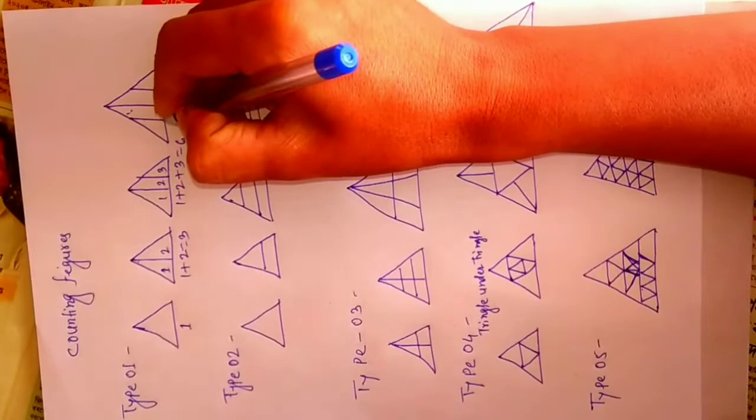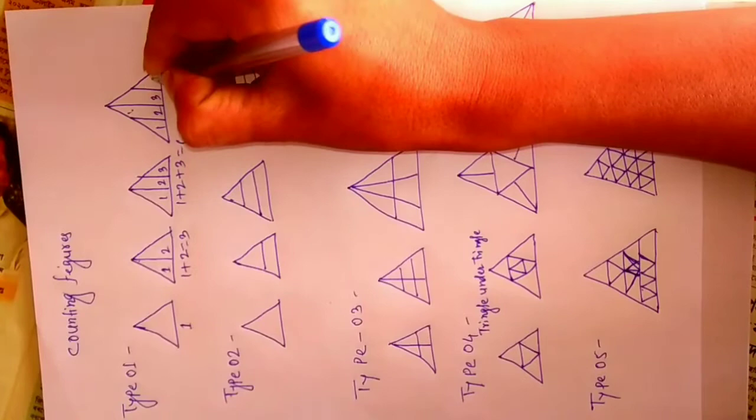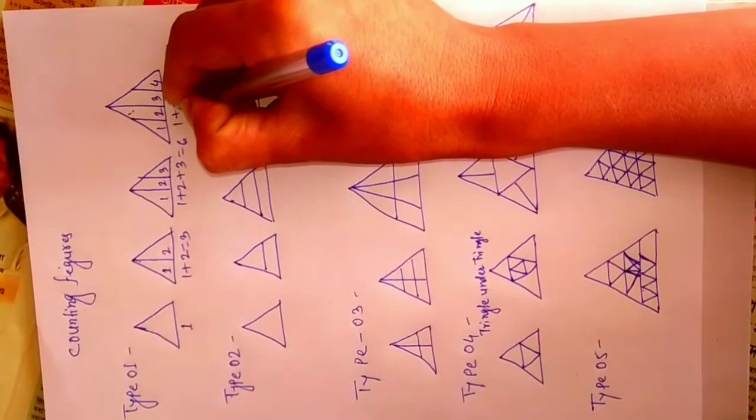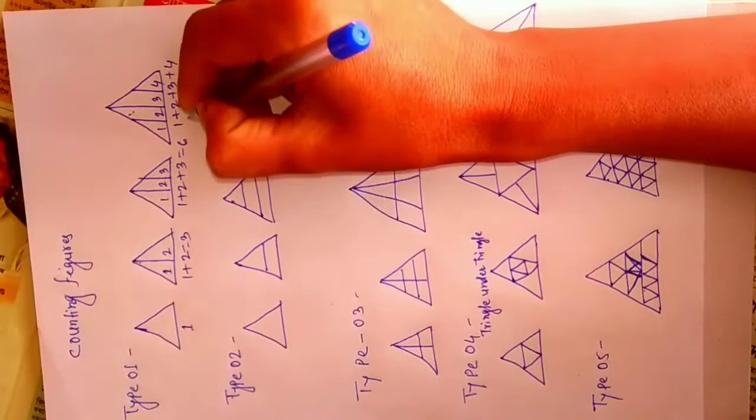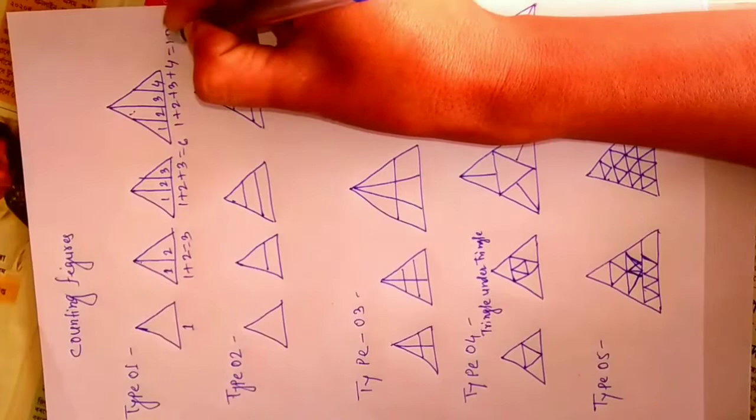Type 1, 2, 3, 4. 1 plus 2 plus 3 plus 4. That's 3, then 6. 6 plus 4 equal to 10.